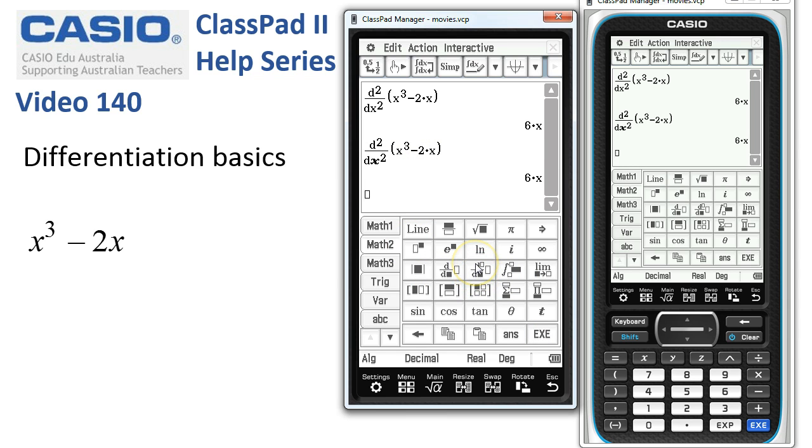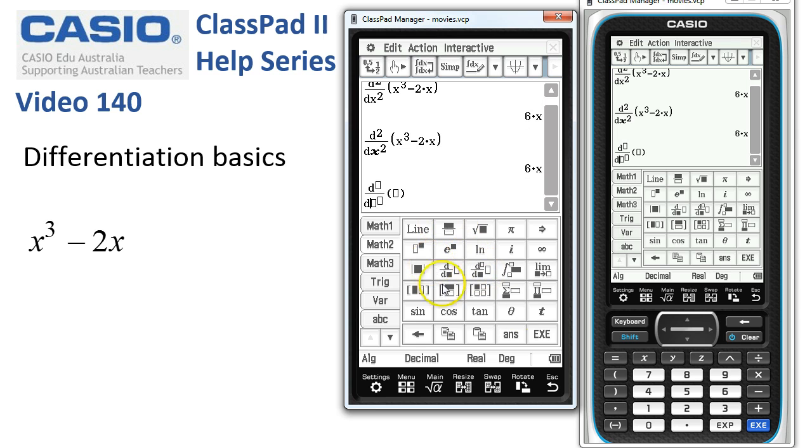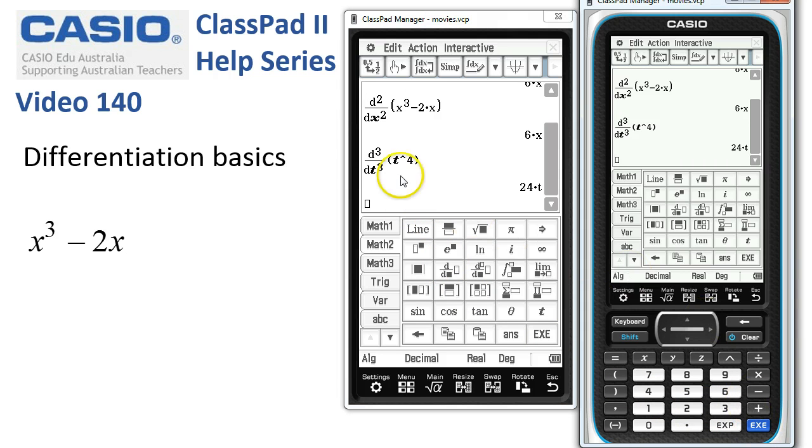We could also differentiate with respect to other variables. Maybe I've got a t on this math 2 just over here. So let's differentiate something like t to the power of 4. Maybe we'll do the third order derivative there. Tap execute, and we end up with 24t after differentiating this expression three times.